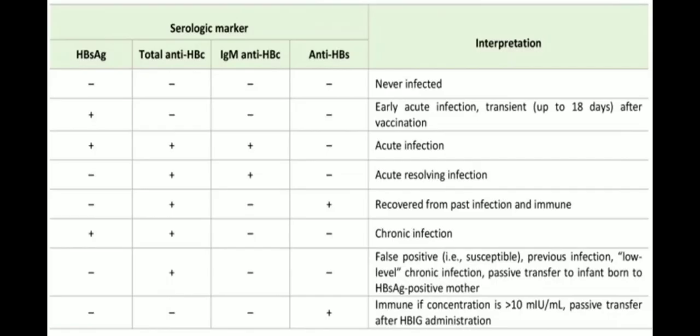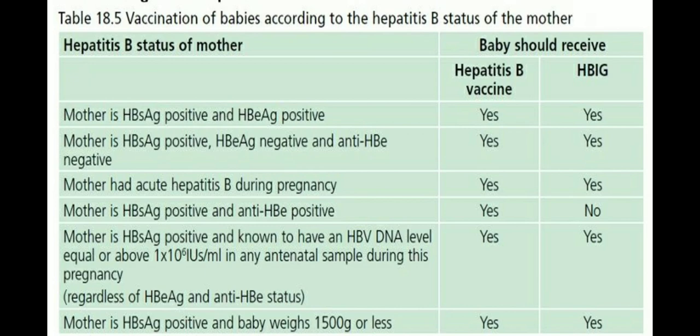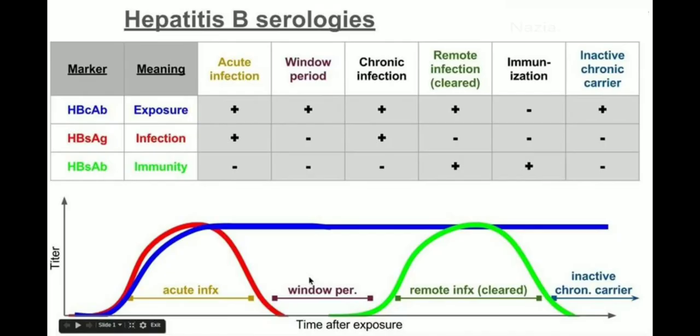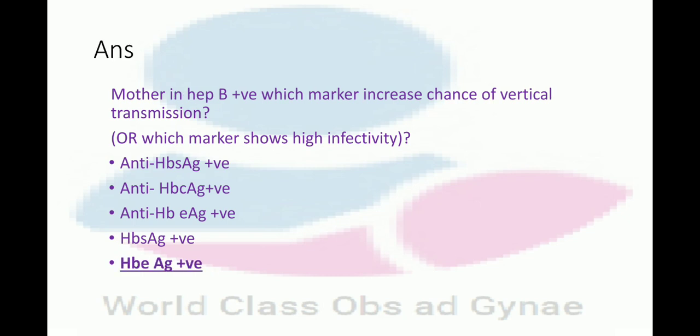These are some tables which show interpretation based upon the different markers — you can pause the video and check them. There is also a graphic presentation. Exam question: HBe antigen shows high infectivity. Thank you so much. I tried to explain it very simply, and you can pause the video to have a better understanding of this topic. Thank you so much. Allah Hafiz.